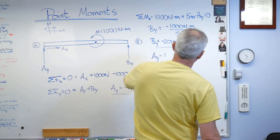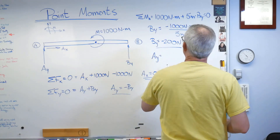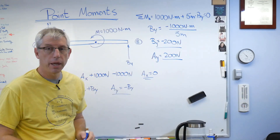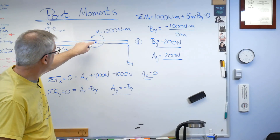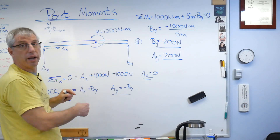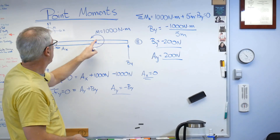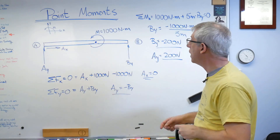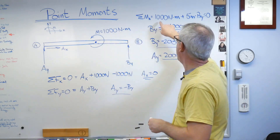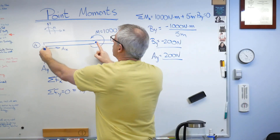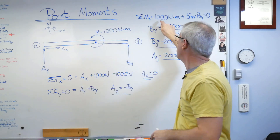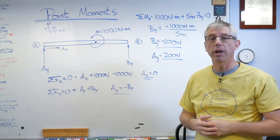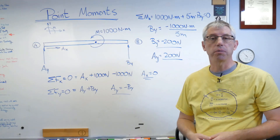Ay equals negative By. Now, what if this point moment existed somewhere else — instead of three meters over, what if it was at a different location? Doesn't matter. Ay and By are going to be the same, because the point moment just gets added into the equation. The distance from A to the point moment doesn't show up anywhere in the calculation. So there you go — that's how to handle a point moment when solving statics problems.